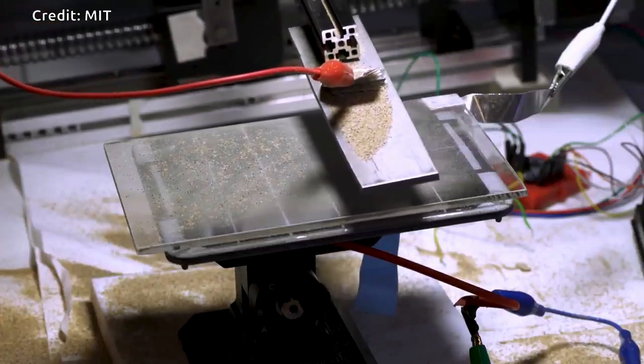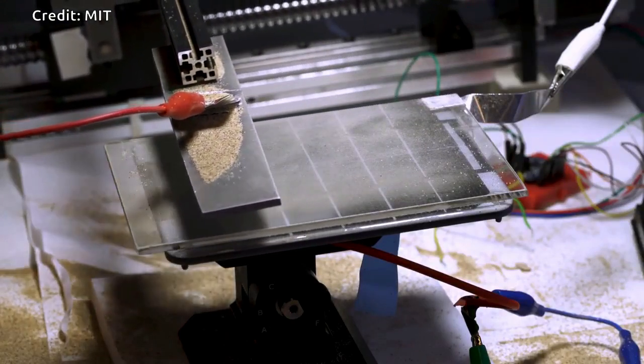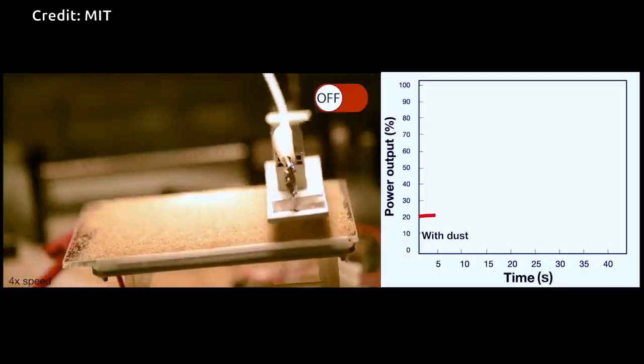a simple electrode passes just above the solar panel's surface, imparting an electrical charge to the dust particles, which are then repelled by a charge applied to the panel itself.